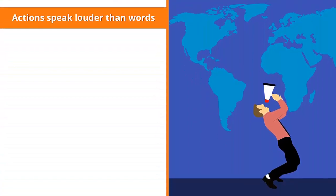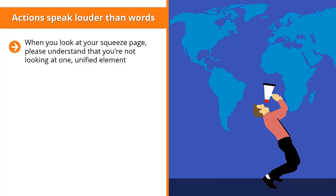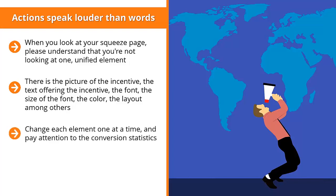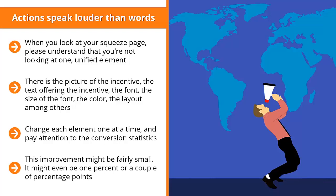When you look at your squeeze page, understand that you're not looking at one unified element — it's made up of many different parts: the picture of the incentive, the text offering the incentive, the font, the size of the font, the color, the layout, among others. Change each element one at a time and pay attention to the conversion statistics. Make many different variations and test these against your traffic. You should quickly see that at least one variation has a higher conversion rate — the improvement might be small, even just one or a couple of percentage points, and that's okay.